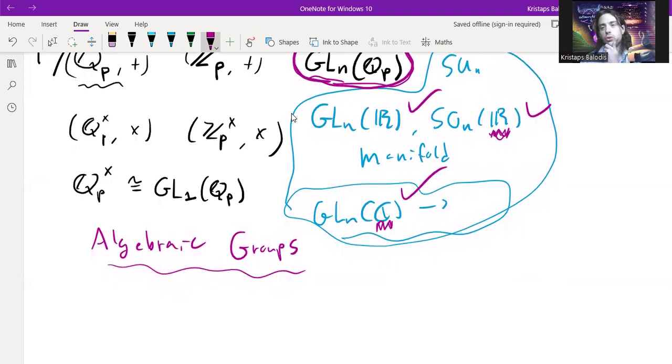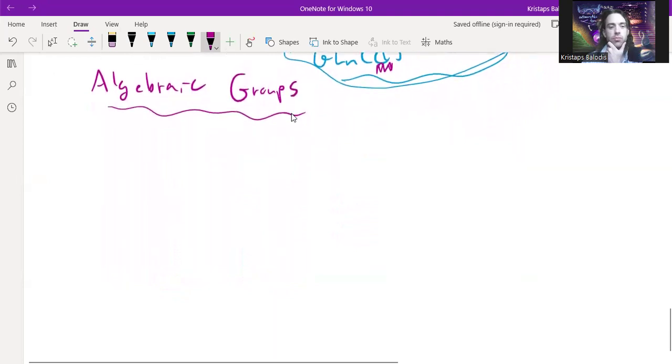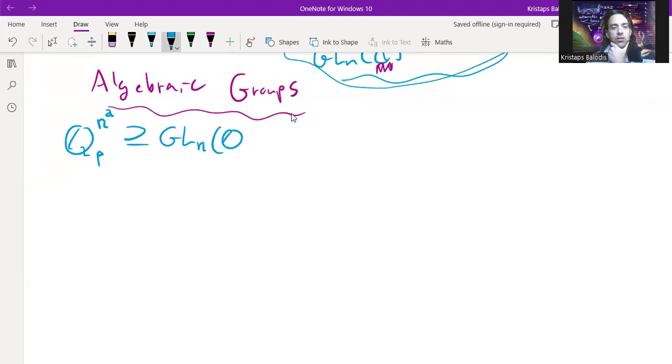We're also going to look at the p-adic topology that this comes from. What do I mean by that? Well, the p-adic numbers have a topology, so we can just take the product topology on the p-adic numbers n squared, and of course within there is just the n by n square matrices.